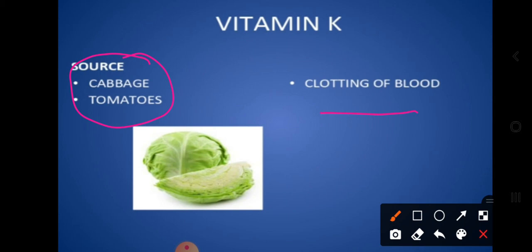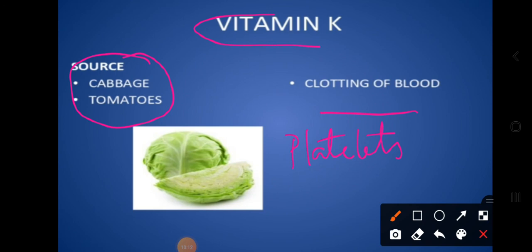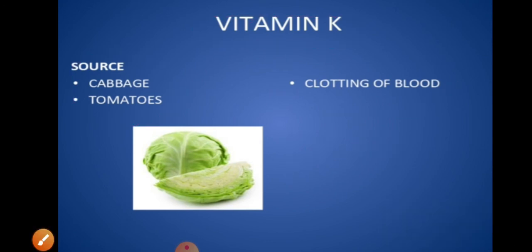In lower classes you came to know that whenever you have an injury, platelets are specialized blood cells that act on the site of injury and help in clotting of the blood. Along with platelets, there are blood clotting factors that help in clotting. Vitamin K is one such factor — intake of Vitamin K rich food fastens the clotting of blood and prevents excessive blood loss from the injured area.